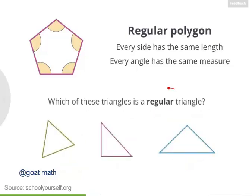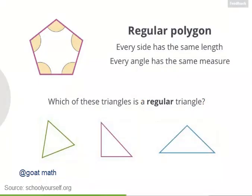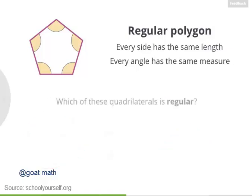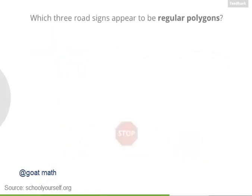So next, which of these triangles is a regular triangle? Some of these have two equal sides, but this is the only one with three equal sides. And which of these quadrilaterals is regular? It's this one — and as you might already know, a regular quadrilateral is more commonly called a square.